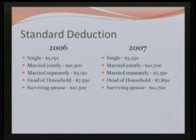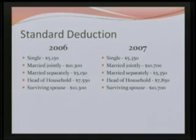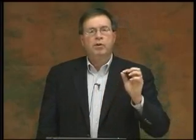If you're single and you file a tax return and do not itemize but claim a standard deduction, the amount in 2006 was $5,150; in 2007 it jumps up to $5,350. Married filing jointly was $10,300 in 2006 and has jumped to $10,700 — notice that's twice the single amount. For 2007: married filing separately is $5,350; head of household is $7,850; and surviving spouse, same as married filing jointly, is $10,700. These numbers matter when a taxpayer must determine whether itemized deductions are large enough versus taking the standard deduction.